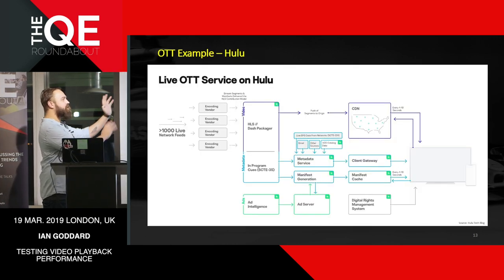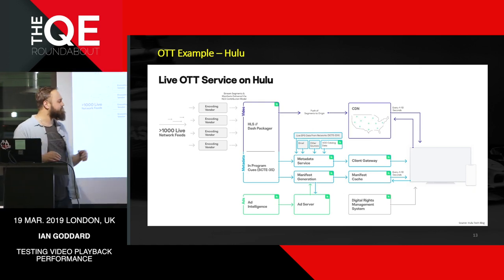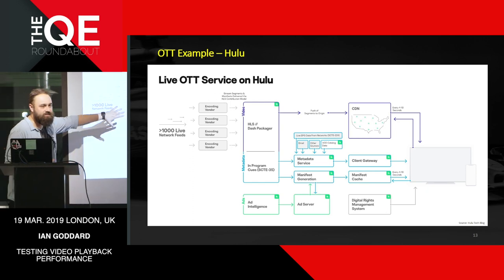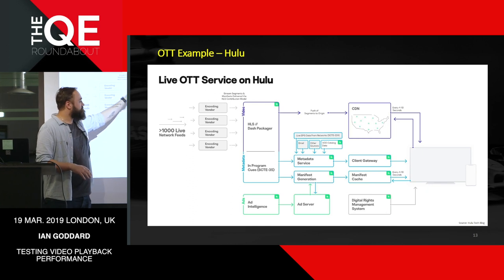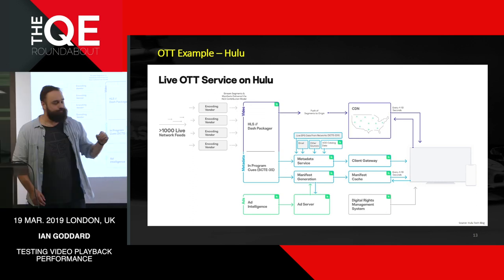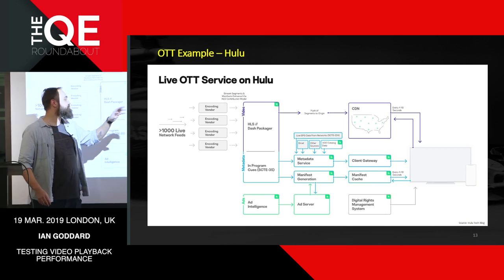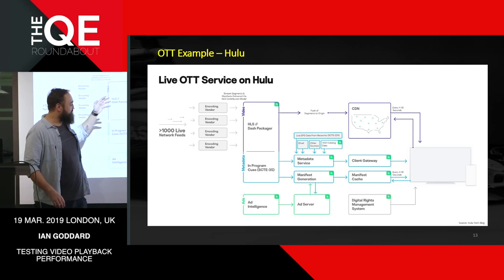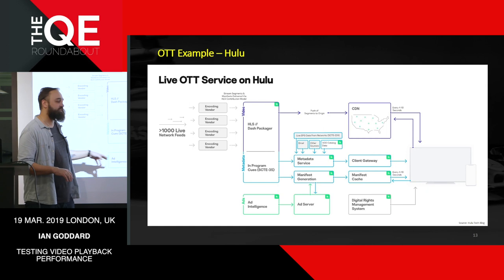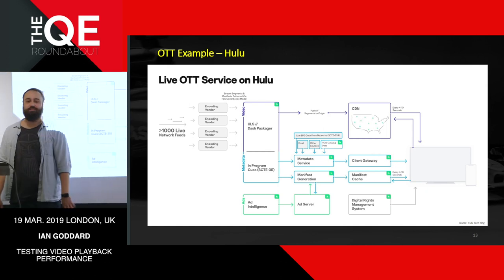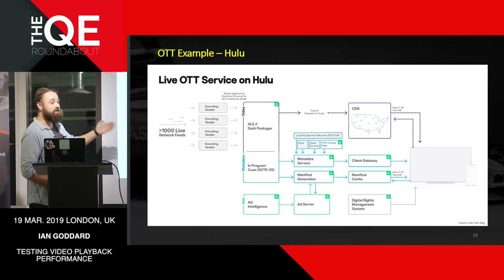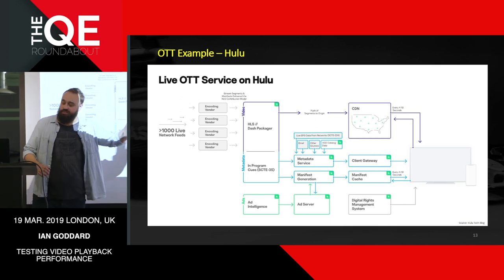With all that in mind, here's a Hulu example from a couple of years ago. From a QA point of view, this is exactly what I want to see. They don't care about encoding upstream — they just package up the content with their HLS manifest and push it to all their CDNs, getting it to devices every four to ten seconds. At the same time, they attach metadata, EPG, emails, VOD catalog data, push it all together with their manifest, and also handle their ad server and DRM, all simultaneously.